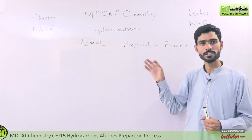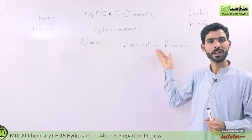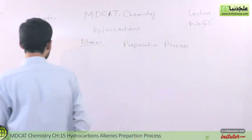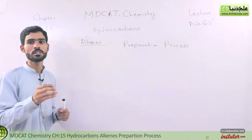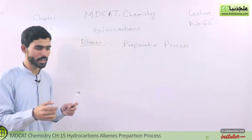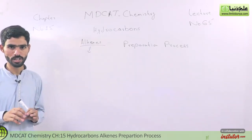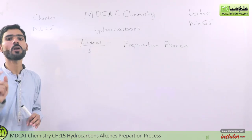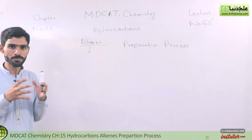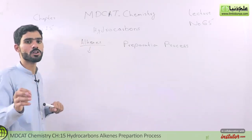First of all, we will look at Alkenes — the general formula — and then we will discuss some preparation methods. If we talk about Alkenes, Alkenes are also types of hydrocarbon. We simply say that this is a member of the hydrocarbon family. Alkenes are those hydrocarbons which contain carbon-carbon double bonds. Compounds having double bonds are called Alkenes, which is a functional group.